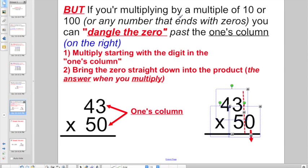If you're multiplying by a multiple of 10 or 100, or any number that ends with zeros, you can dangle the zero past the ones column on the right. So you will multiply, starting with the digit in the ones column still, and just bring the zeros straight down into the product. And hopefully you remember, the product is the answer when you multiply.